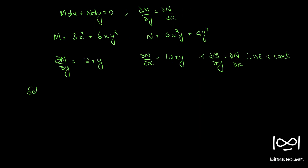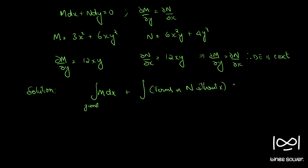The solution for such an equation is given by: ∫M dx (y considered constant) + ∫(terms in N without x) dy = c. This gives us ∫(3x² + 6xy²) dx.